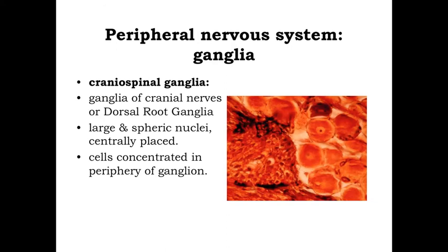Most of the time in histological specimens, when we're looking for nervous tissues we're going to be looking at ganglia, because the primary location for nerve cell bodies is in the central nervous system — the brain or spinal cord — but you're probably not going to be looking at a lot of images of those. Instead, we look at ganglia for nerve cell bodies outside of the CNS. The classic example is the cranial spinal ganglia — the ganglia of the cranial nerves — or most commonly the dorsal root ganglia, the sensory ganglia found just lateral to the spinal cord.